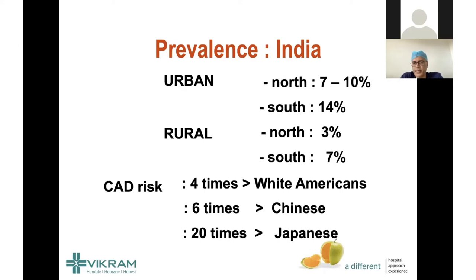As South Asian people, we have four times more risk than white Americans or Caucasians, six times more than Chinese, and 20 times more risk than Japanese. As an ethnic group, we are genetically more prone to heart disease. One theory is the thrifty gene theory: because we experienced periods of famine and pestilence, our bodies developed a genetic structure to store calories and fat around the stomach during times of food availability.